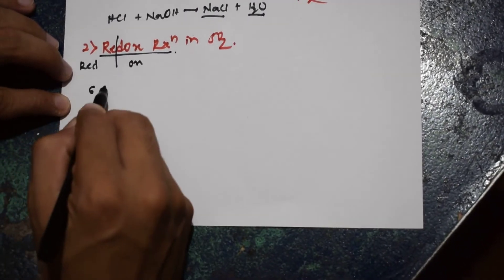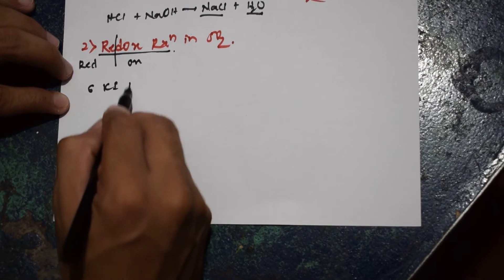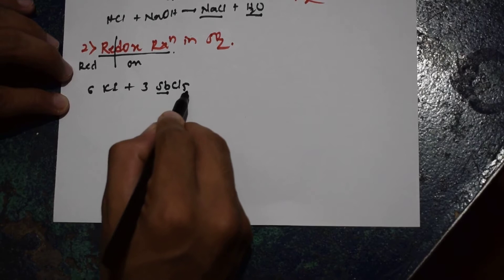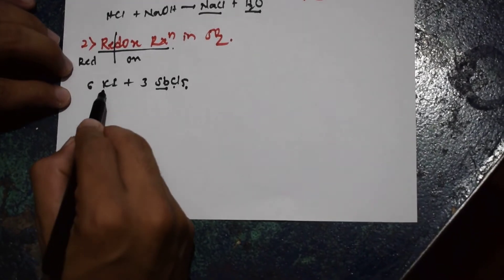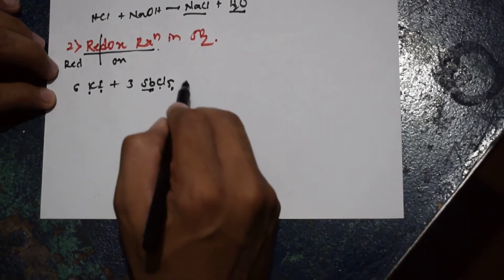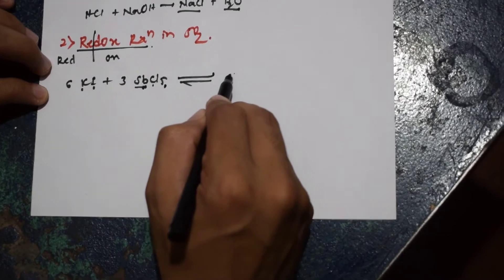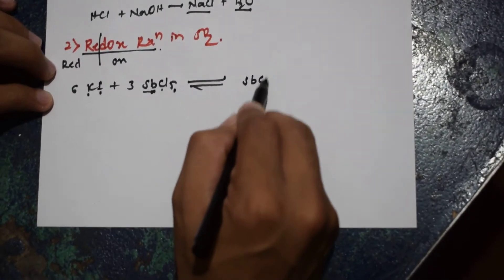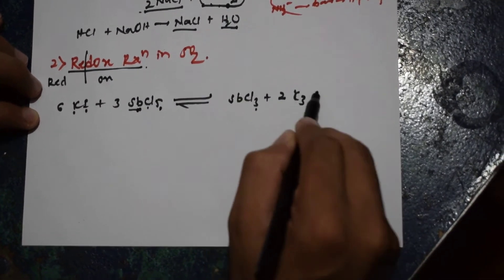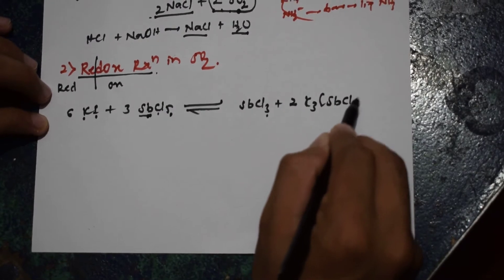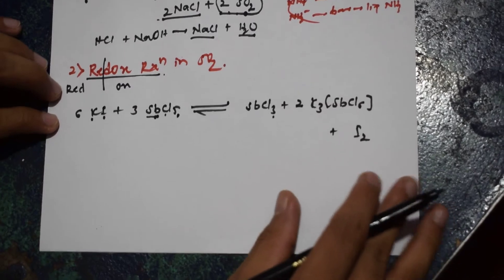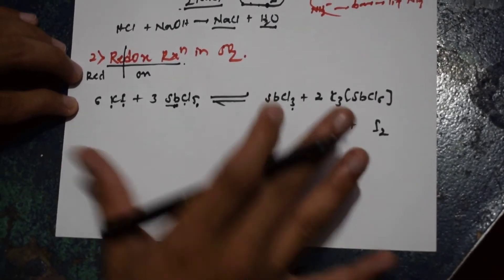Let me consider 6 moles of KI, potassium iodide, plus 3 molecules of SbCl₅, antimony pentachloride. Potassium iodide reacts with antimony pentachloride and the products are SbCl₃ — antimony trichloride — plus 2 molecules of K₃SbCl₆, which is a complex, plus I₂, iodine. This is a good example for redox reaction.